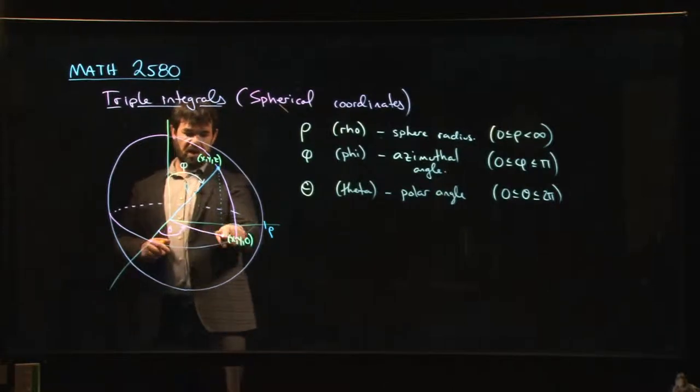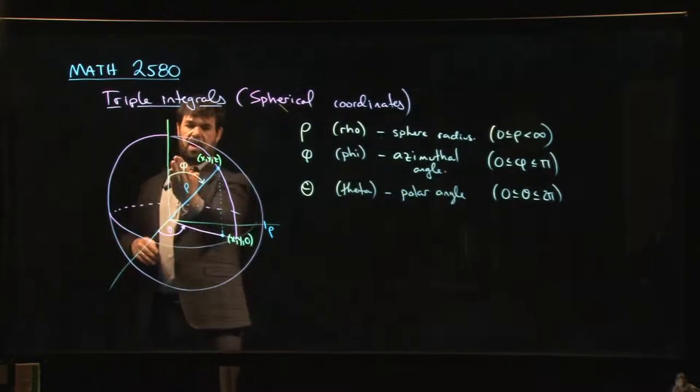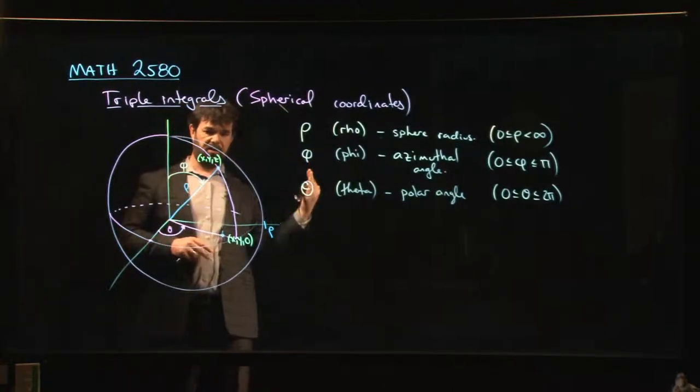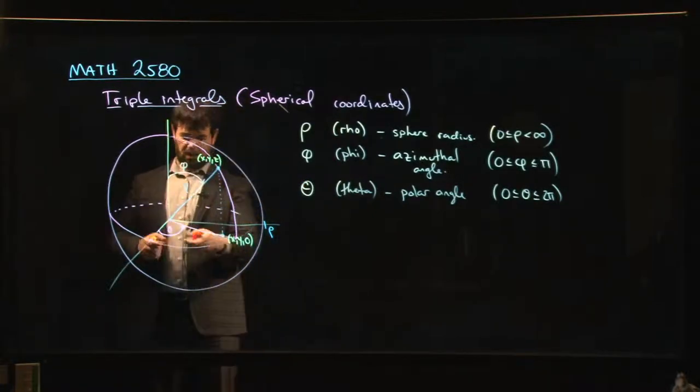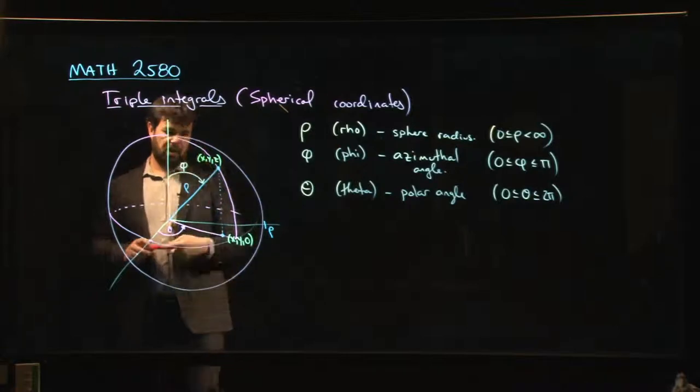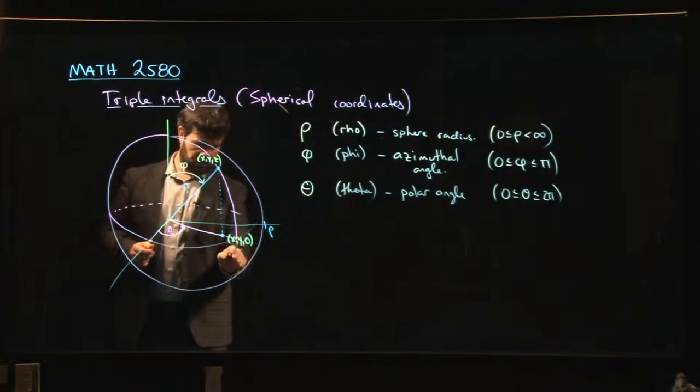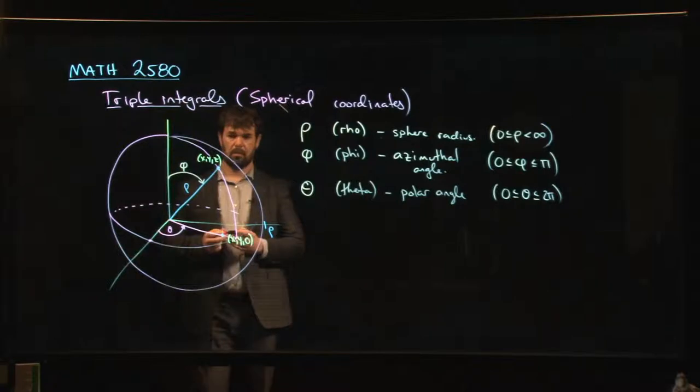If rho is constant, you're on a sphere, right? So you put yourself on a sphere, and now you need coordinates on that sphere, the so-called spherical coordinates, which are these two angles. So a constant theta, just as before, is kind of a half plane coming out of the z-axis.